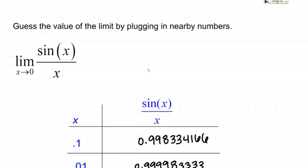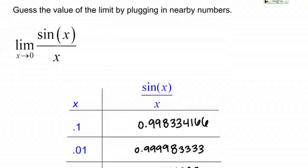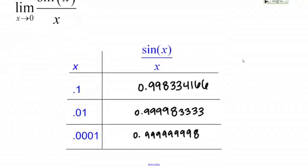To save ourselves a little bit of time, I've gone ahead and calculated the function values using a calculator. You'll see that in the left hand column we have some X values, and these X values are getting closer and closer to 0. I have 0.1, 0.01, and 0.0001, and in the right hand column I have the associated function values.